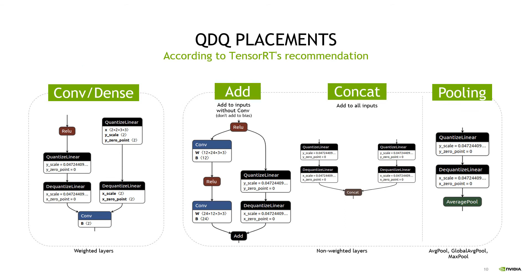In this slide, we see how we place QDQ nodes according to TensorRT's recommendation, which is implemented by the Quantization Toolkit. For weighted layers such as convolution or dense, we place QDQ nodes at the inputs and weights of the particular layer. For non-weighted layers such as concat and pooling, we add QDQ nodes at all the particular inputs. For residual add, we see that the QDQ nodes are being placed on the residual branch of the network.